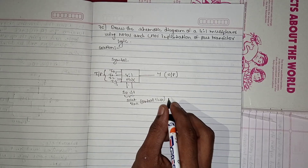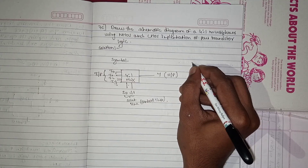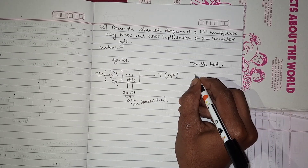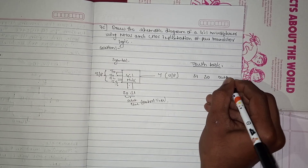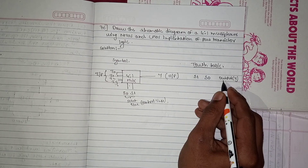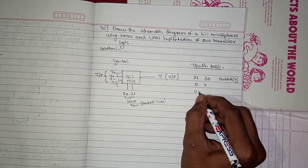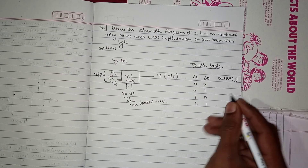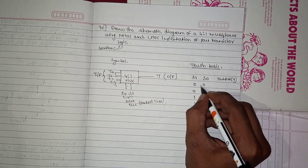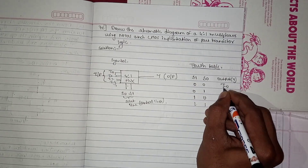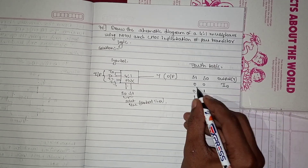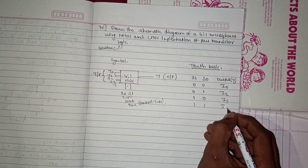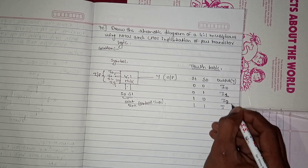Before drawing the schematic we need the truth table of the 4-to-1 multiplexer. The select lines are S1 and S0. When S1=0, S0=0, output is i0. When S1=0, S0=1, output is i1. When S1=1, S0=0, output is i2. When S1=1, S0=1, output is i3.